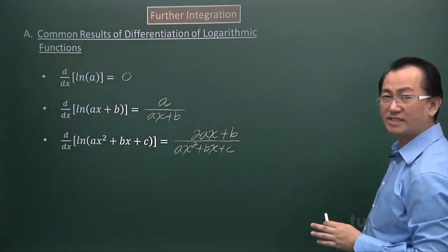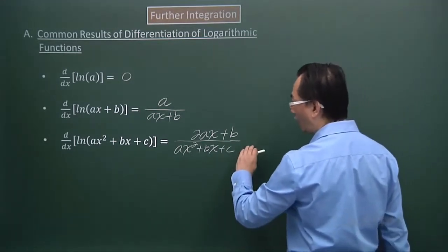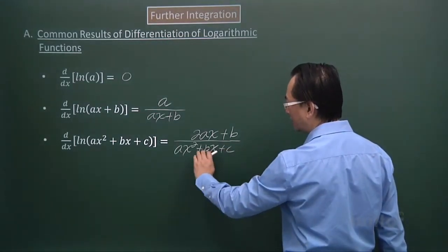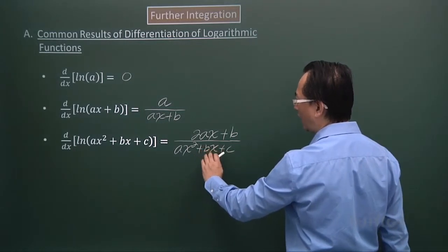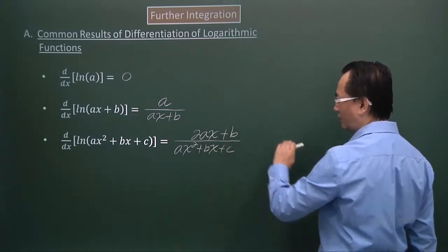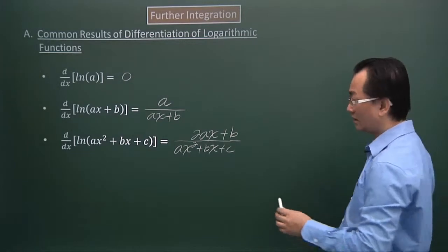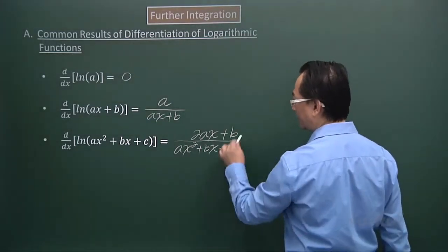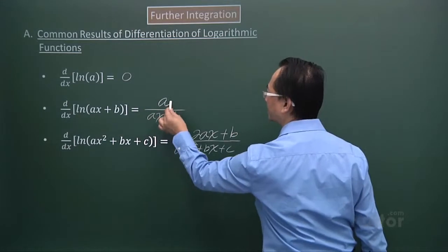And you notice that with this result, the order of the denominator expression will be 1 more than the order of the numerator expression. Quadratic here, linear here. Linear here, constant.